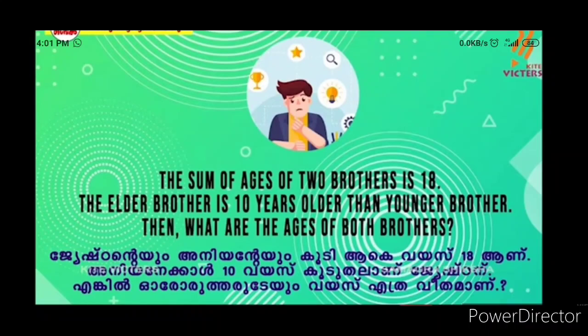The sum of the ages of two brothers is 18. The elder brother is 10 years older than the younger brother. What are the ages of both brothers?